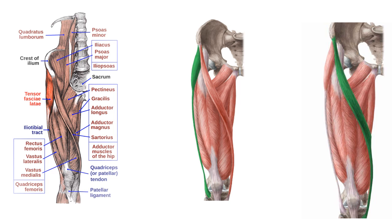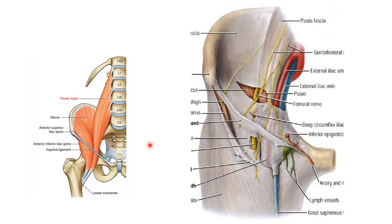A few muscles we need to understand as landmarks when scanning the patient's groin. The first is tensor fascia latae — it's important because the first fascia we pierce during a fascia iliaca block is the fascia latae, which originates from this tensor fascia. The second muscle is sartorius, which arises from the lateral aspect of the ASIS, crosses medially, and joins at the knee. The third and fourth important muscles are the iliopsoas: the psoas originates from the lateral aspect of the thoracolumbar vertebrae and joins the iliacus, which originates from the iliac crest.